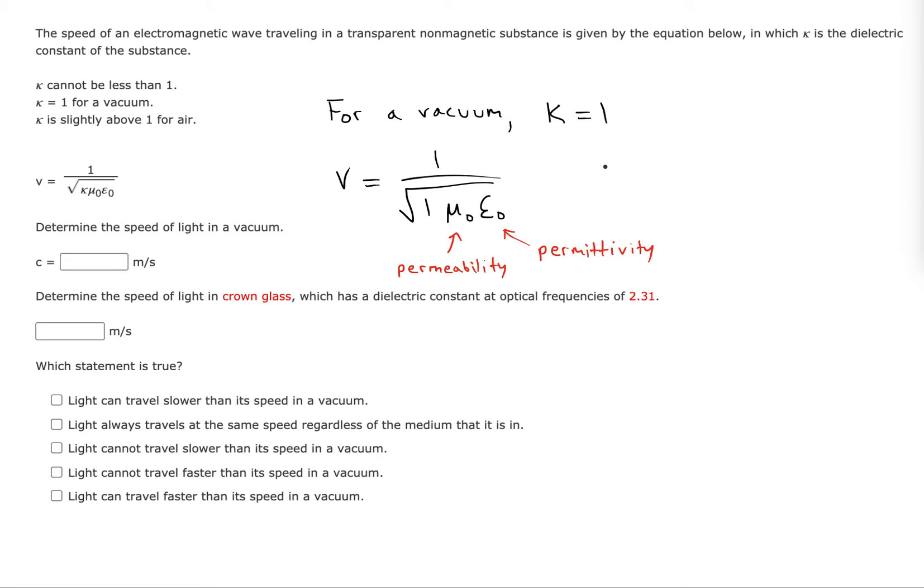So in this special case that kappa is 1, we're going to be finding the speed of light in a vacuum. 1 over the square root of mu naught epsilon naught.